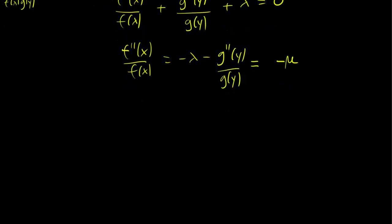So we have these equations now. f''(x)/f(x) equals minus mu, and g''(y)/g(y) equals lambda minus mu. The first one is just the regular old boundary value problem that we have done in the past, the one-dimensional boundary value problem. And the second problem is a bit more complicated, but as you can see, it's really not much more complicated.